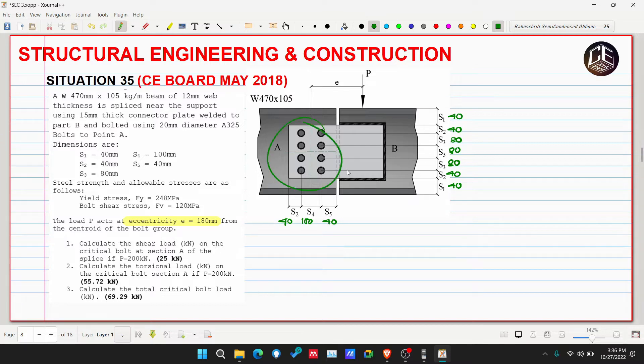The eccentricity e is 180 millimeters. This topic is under eccentric connection. If we say eccentric connection, the load has an eccentricity with respect to the centroid. We also have what we call concentric connection. When we say concentric, the load P is concentrated at the centroid of the connection, so there's no eccentricity.